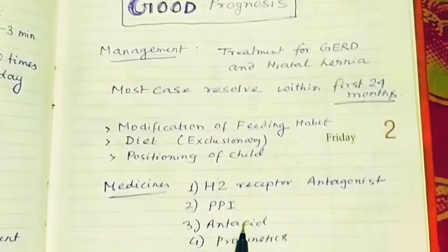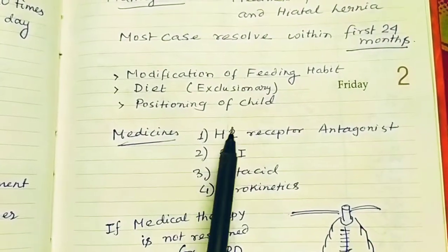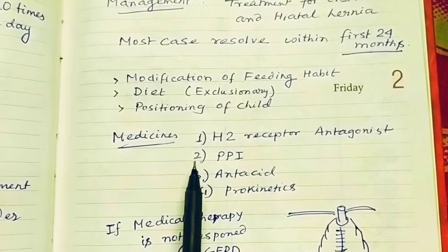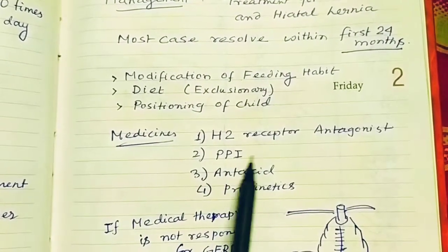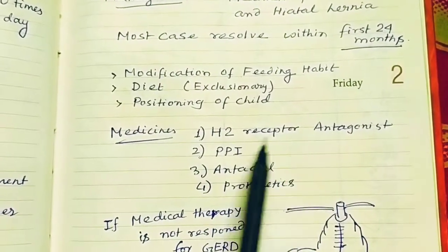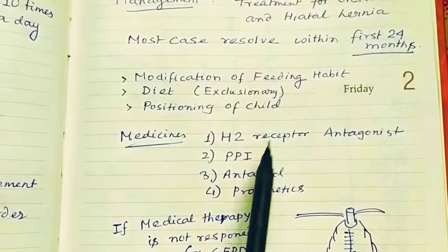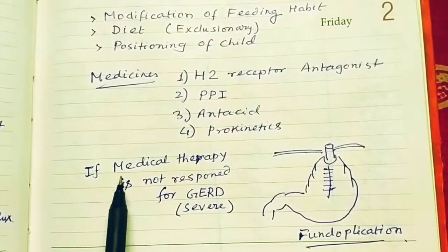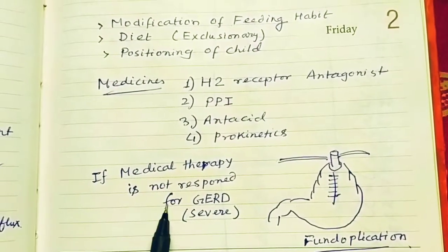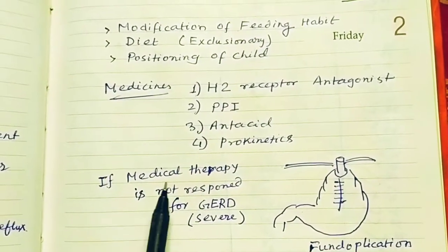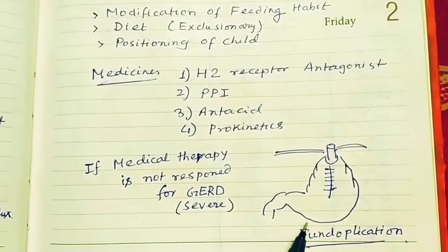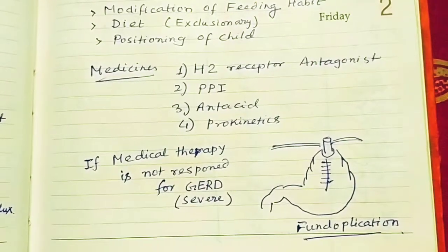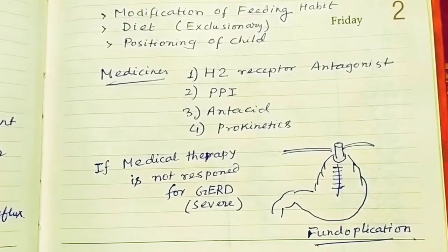Medications include H2 receptor antagonists (H2 blockers), proton pump inhibitors (PPIs), antacids, and prokinetics — all commonly used in GERD patients. If medical therapy is not effective and the patient has severe GERD, surgery in the form of fundoplication is performed.